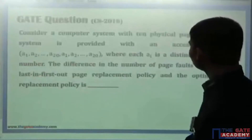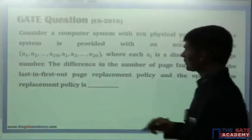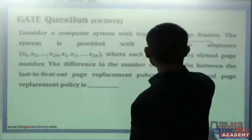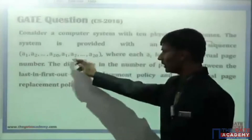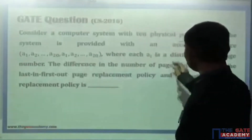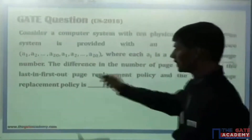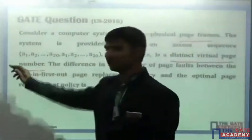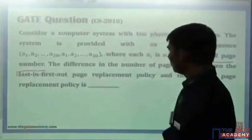Consider a computer system with 10 physical page frames. The system is provided with an access sequence A1 to A20, where each Ai is a distinct virtual page number.